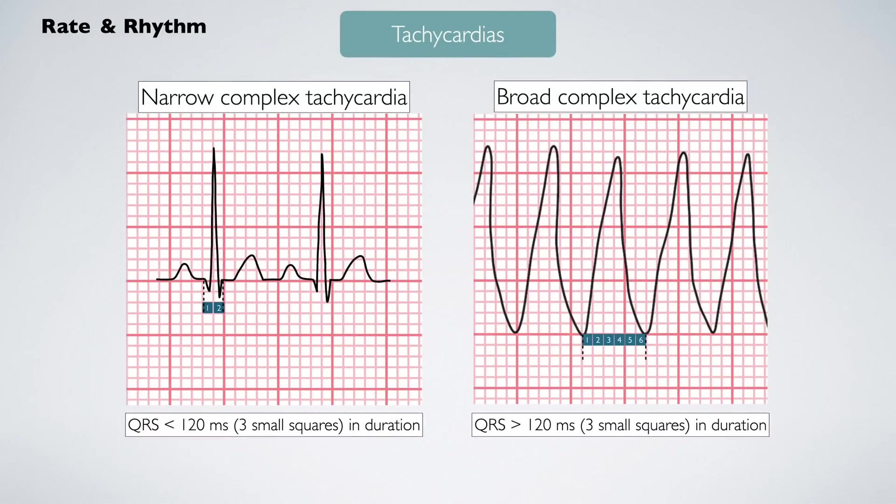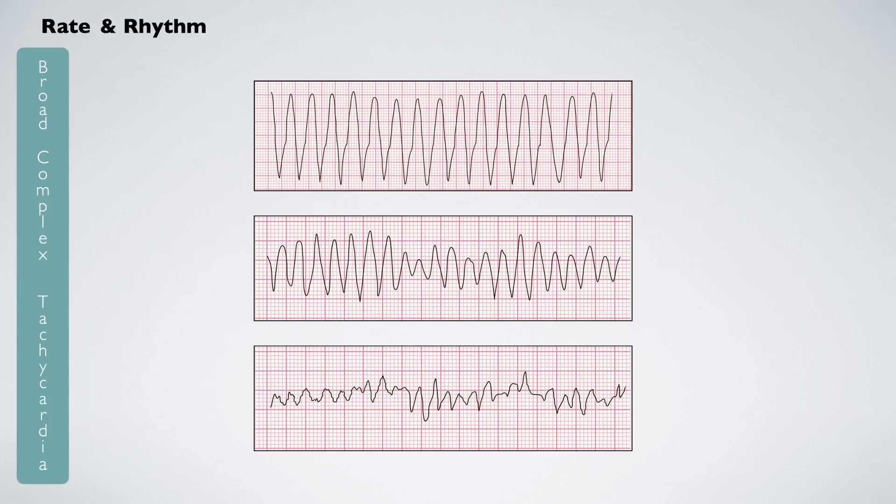Let's move on to the broad complex tachycardias. These are dangerous rhythms, so patients require immediate medical attention. Each will have a ventricular rate greater than 100 beats per minute and a broad QRS complex. They can be divided into regular and irregular rhythms. If there are three or more broad abnormal QRS complexes in series that occur with regular intervals and have similar height and shape, this is likely monomorphic ventricular tachycardia.